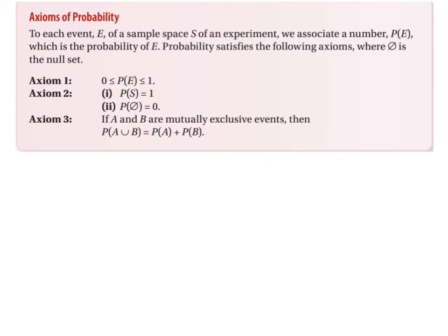Let's talk about the axioms of probability. An axiom in maths is just a rule that we know to be true — we don't have to prove it, it's just so inherently obvious we take it to be true. The first axiom is that the probability of an event will lie between 0 and 1. The second axiom is the probability of the sample space must equal 1, and the probability of the null set is equal to 0.